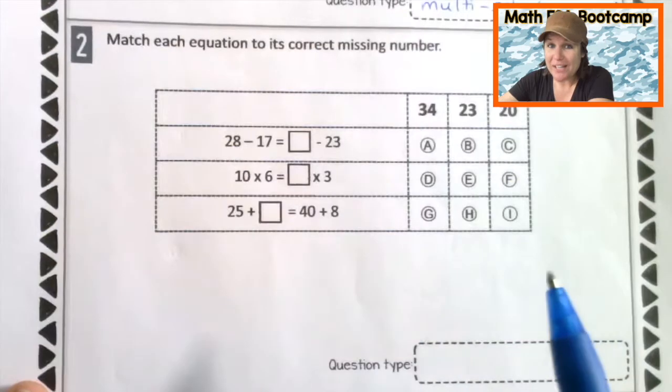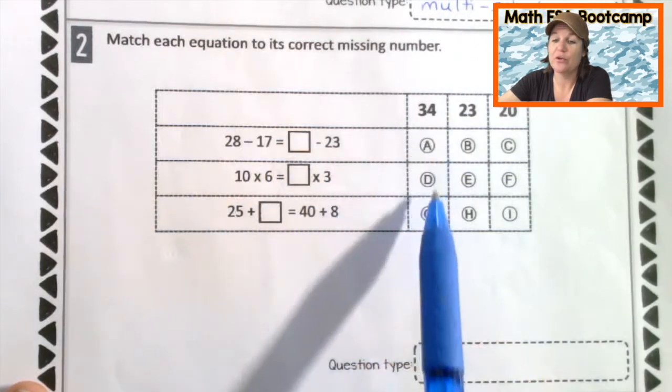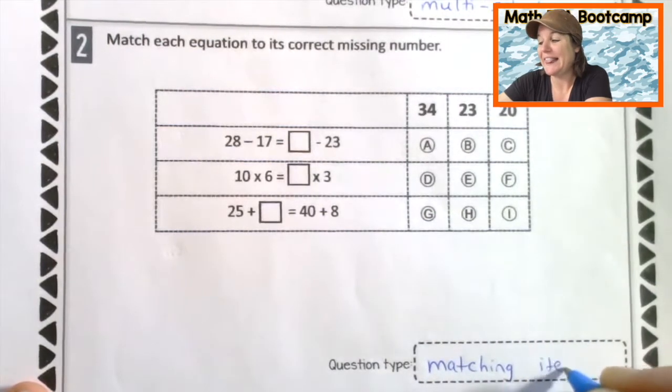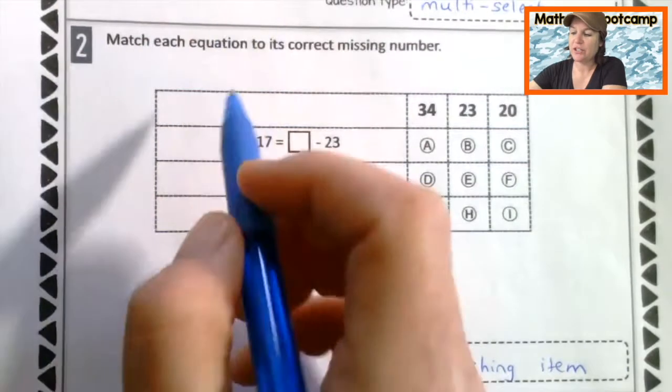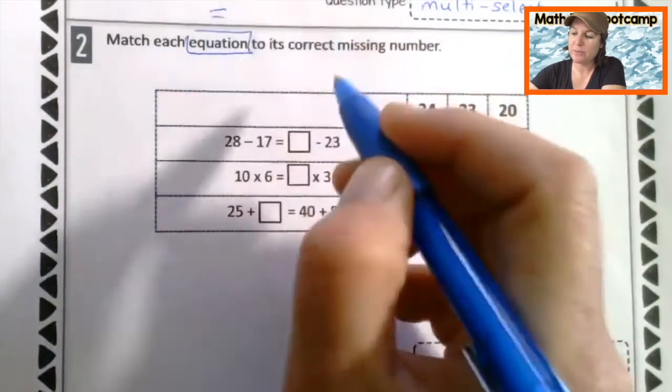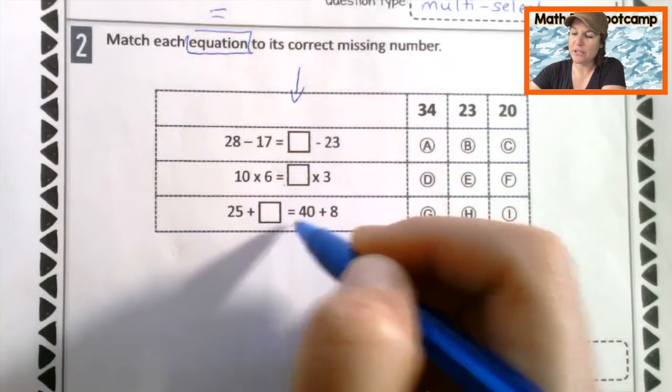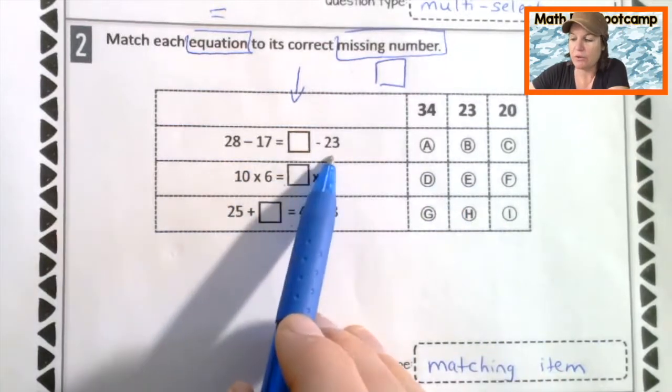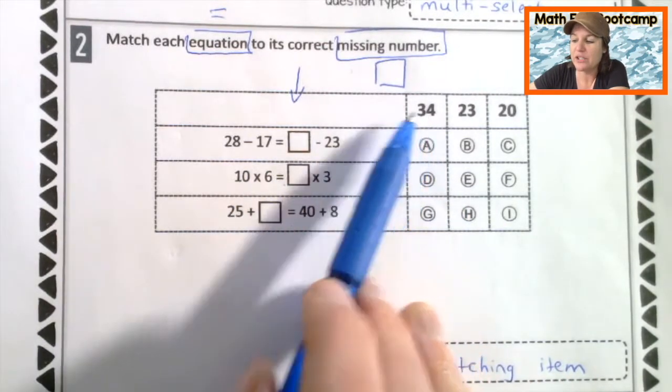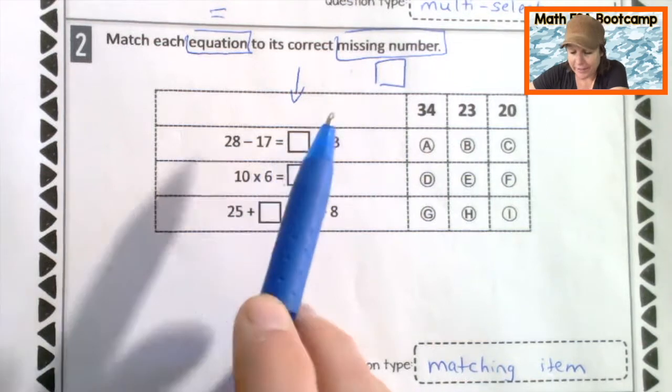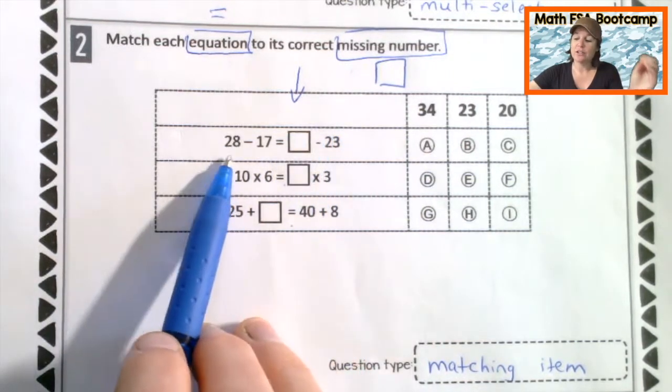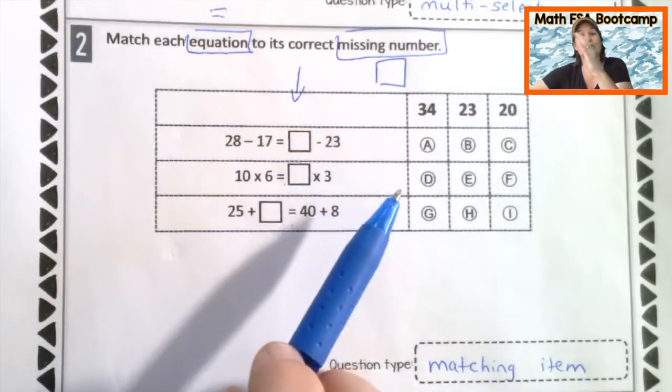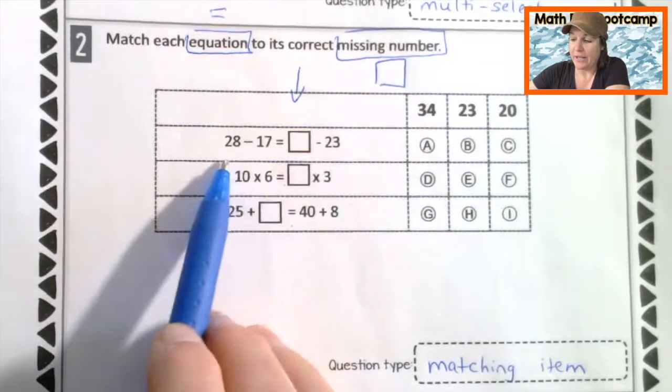Let's go ahead and take a look at number two. We can tell with number two that we're going to match the row with the correct column. So I'm going to go ahead and put right here that this is a matching item question. I love these. I think these are so fun. Match each equation. Equation means that there should be an equal sign and there is, take a look at all those equal signs, to its correct missing number. Those are the boxes. So we're going to take each row and figure out which number belongs in that empty box.